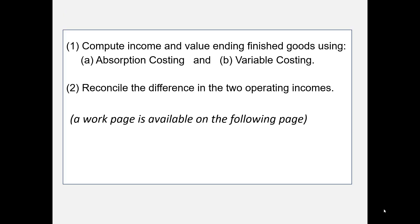What we're going to do is compute income and value ending finished goods using absorption costing and variable costing. Looking at those requirements, we'll prepare the income statement and the part of the balance sheet affected by these two methods — that is, the ending finished goods inventory. Then we're going to reconcile the difference in income under each method.